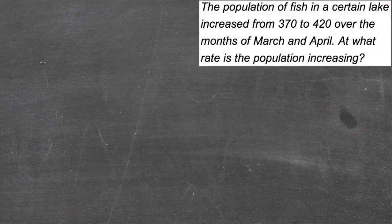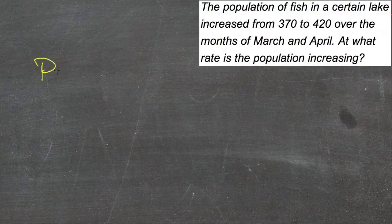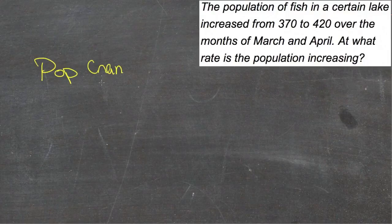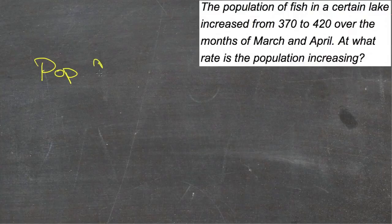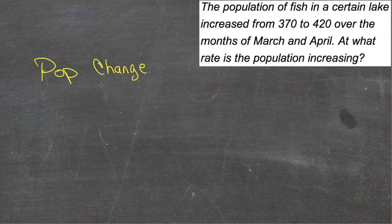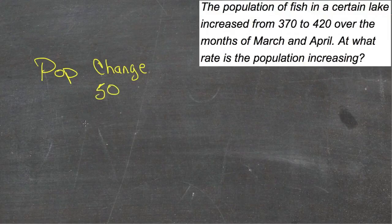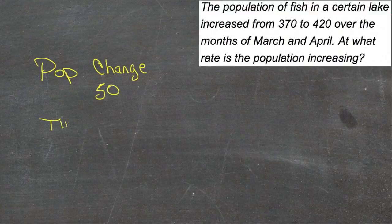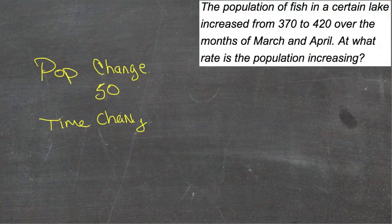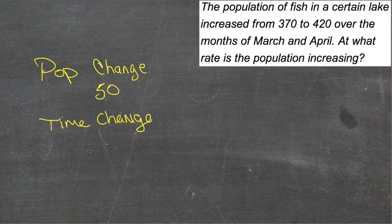And then we have a change in time from March to April, or using the months of March and April. So what we have is a change in population. Population change of 370 to 420, so 50. And then a time change of 2 months.